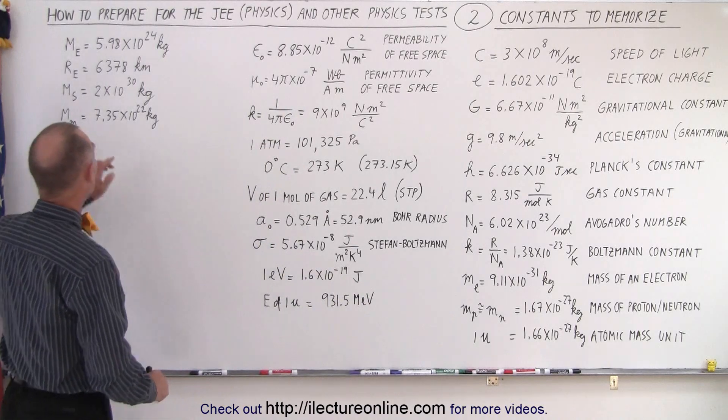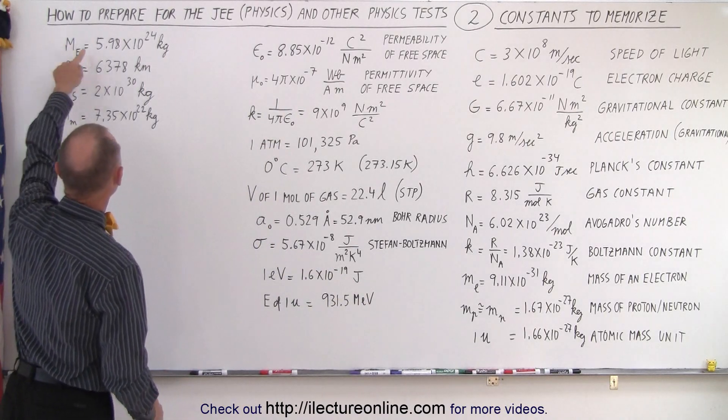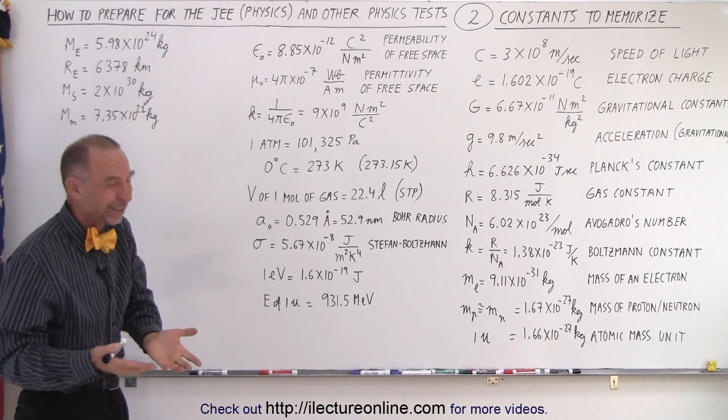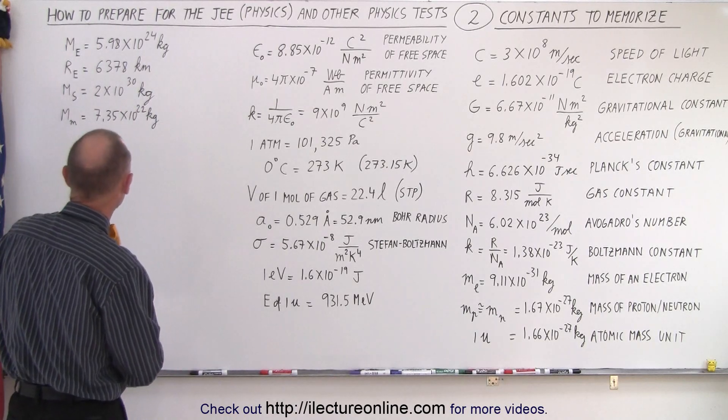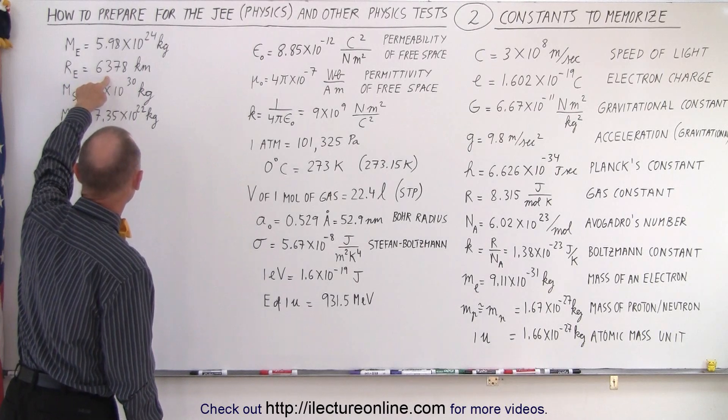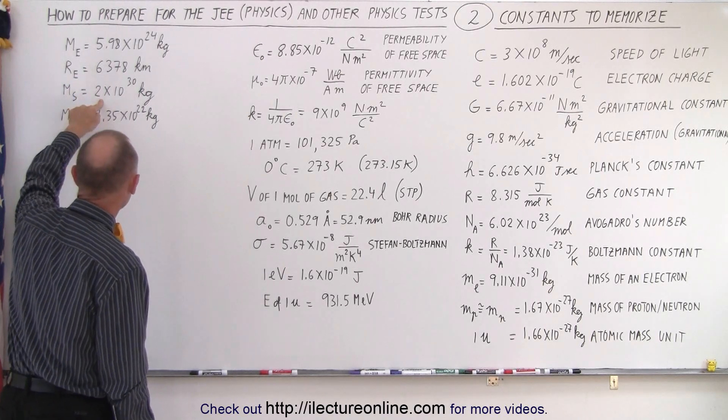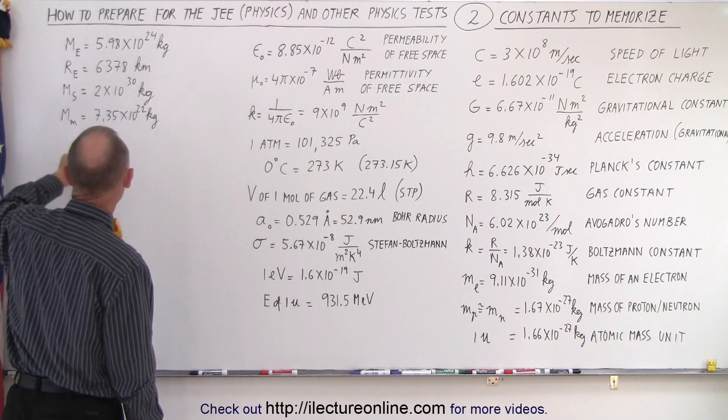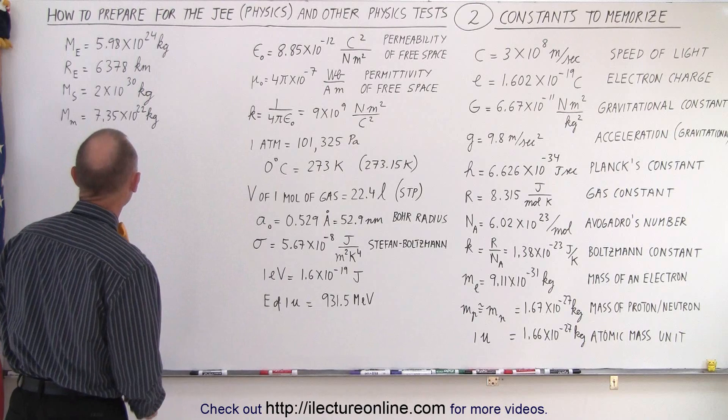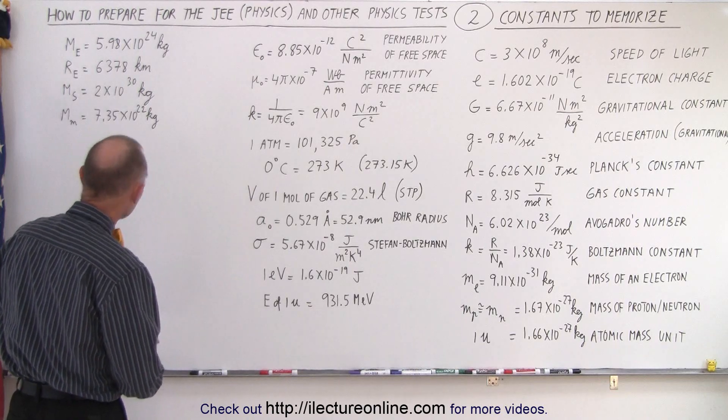It's also not a bad idea to memorize the mass of the Earth, which is 5.98 times 10 to the 24 kilograms. You can round it off to 6 times 10 to the 24 kilograms. The radius of the Earth is an average of 6,378 kilometers. The mass of the Sun, 2 times 10 to the 30 kilograms. And the mass of the Moon is 7.35 times 10 to the 22nd kilograms.